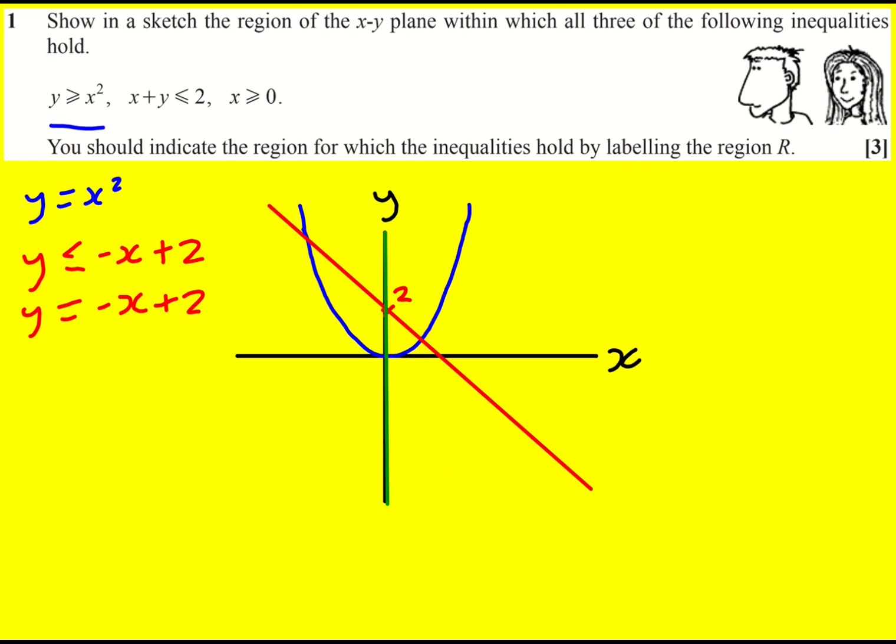Right, now we need a region that satisfies all of these inequalities. It's got to be y is greater or equal to x squared, so it's going to be above this blue curve. Let's put a few little arrows in. Then it's going to be below the red curve.